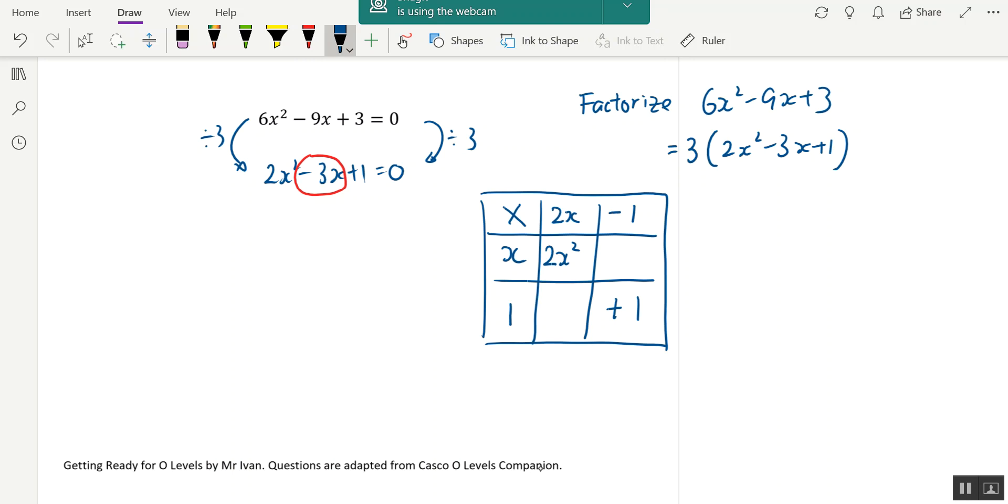So basically, the numbers here will be negative. So this will be minus x and this will be minus 1. When you multiply, this will be minus 2x. You'll check here. This equals to negative 3x, which is the middle term. So if that's correct...